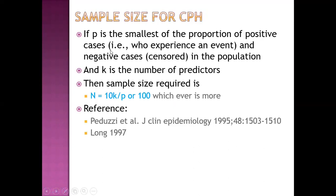For sample size in Cox Proportional Hazard Model, it depends on the proportion of positive and negative cases. If p is the smallest of the proportion of positive and negative cases, and k is the number of predictors, then sample size is given by 10 times the number of predictors divided by the proportion, or 100, whichever is more.